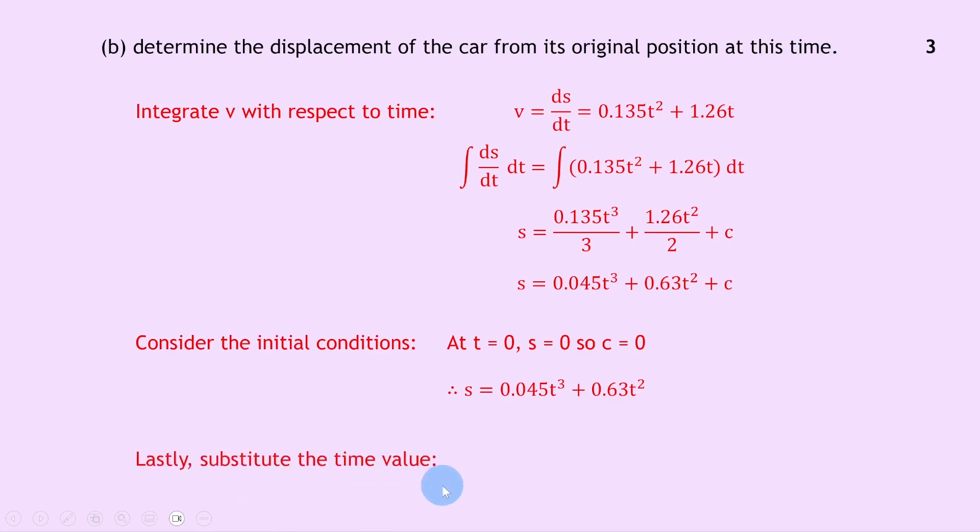Lastly we want to substitute the time value mentioned in part a, which was 15.0 seconds. So we can sub in our 15.0 seconds to say s equals 0.045 times 15.0 cubed plus 0.63 times 15.0 squared. If you put that into your calculator, you should get an answer of 294 meters.